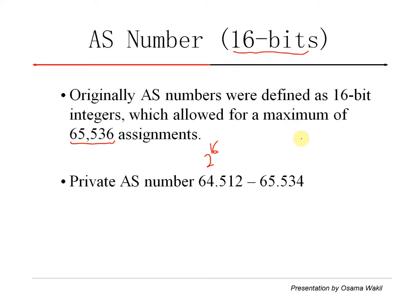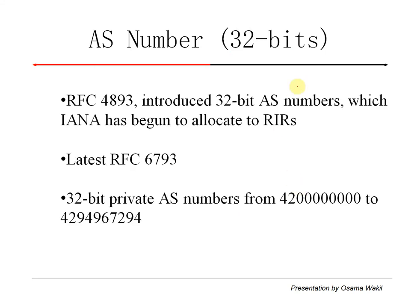But as the Internet grew, these 65,000 assignments were very limited. So they had to increase it. In the previous assignment of 16-bits, there used to be private AS numbers starting from 64,512 to 65,534 only. It was a very small range, some thousand only. So they increased the range.